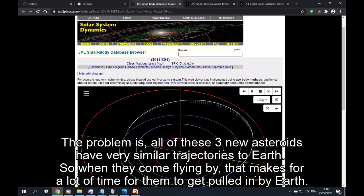The problem is, all of these three new asteroids have very similar trajectories to Earth. So when they come flying by, that makes for a lot of time for them to get pulled in by Earth.